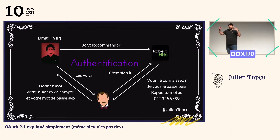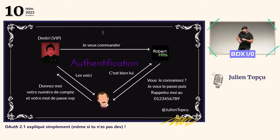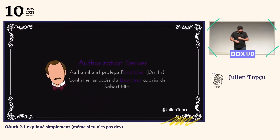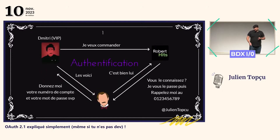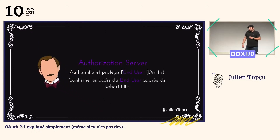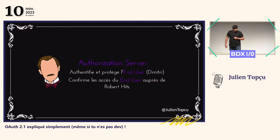We have two protagonists who have to work together, but who don't know and don't trust each other. To be able to work together, they will call a tier of trust, which in this scenario is Gustave. So Gustave has a new role: that is the authorization server. His role is to authenticate and protect the end user, which is Dimitri. Robert Ritz has never direct access to Dimitri's credentials. He is also there to confirm the access of the end user, including the fact that he is a VIP and has an ardoise within the Grand Budapest Hotel.